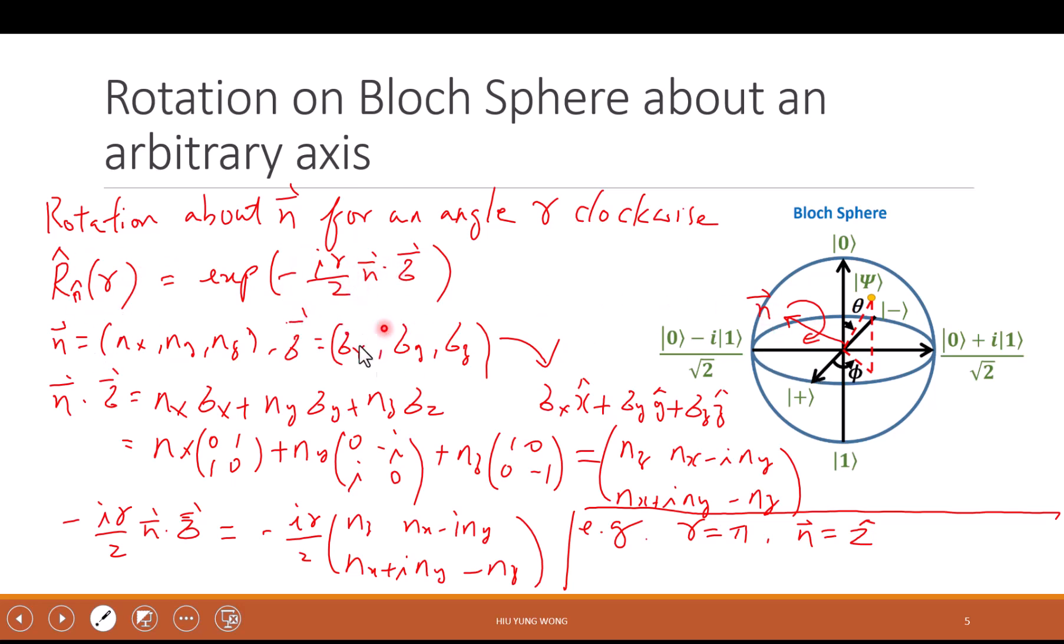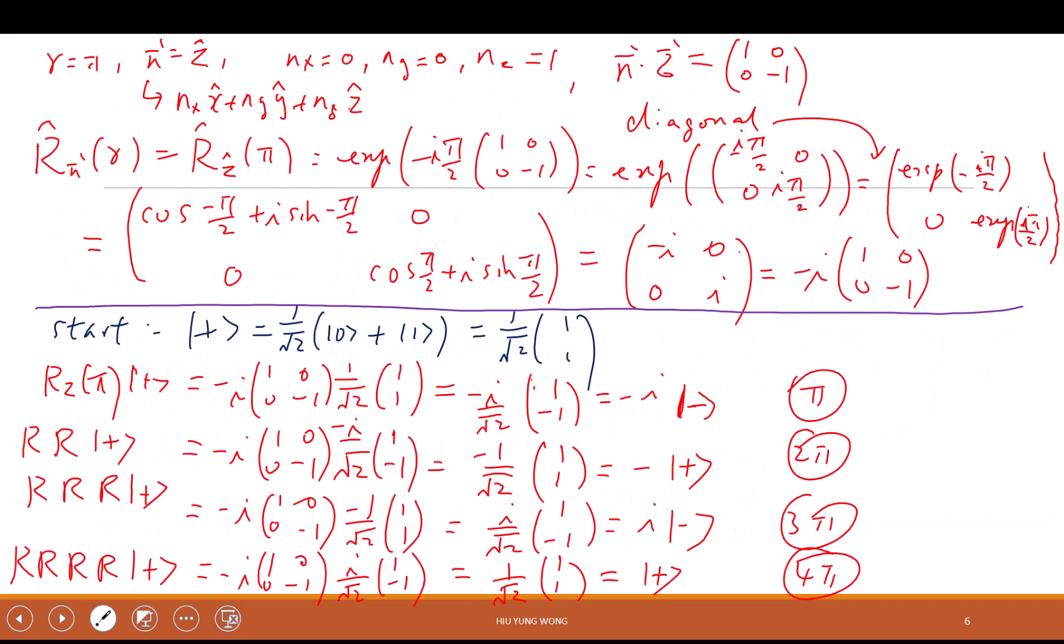We take a special case when γ equals π and n equals z, which just means we rotate about the z-axis by π radians. Because this matrix is diagonal, I can just get the exponentiation of this matrix by exponentiating each of these elements.